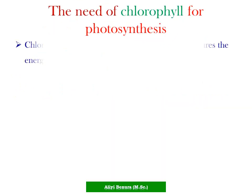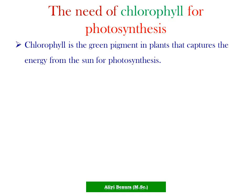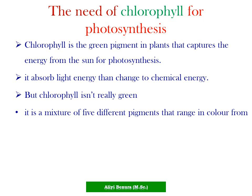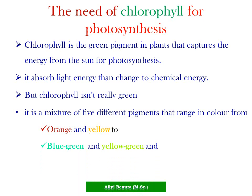The need of chlorophyll for photosynthesis. Chlorophyll is a green pigment in plants that captures energy from the sun for photosynthesis. It also absorbs light energy and converts it to chemical energy. Chlorophyll is not purely green — it is a mixture of five different pigments ranging in color from orange and yellow to blue-green and yellow-green, resulting in the green color we see. These pigments can be identified by chromatography.